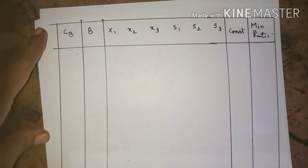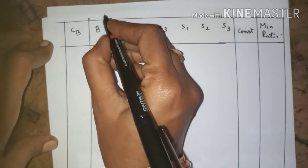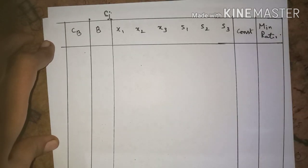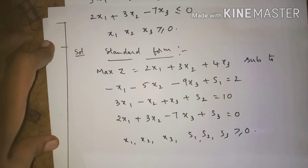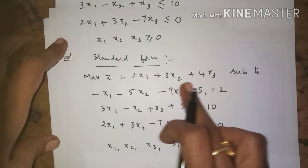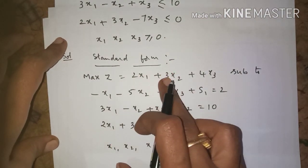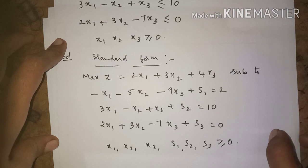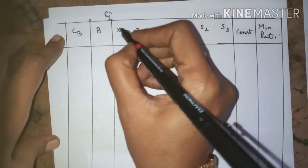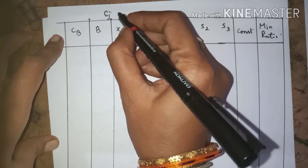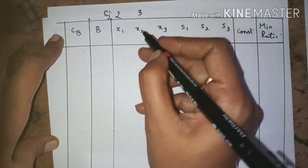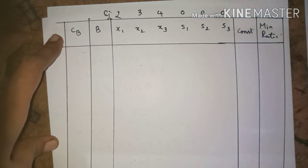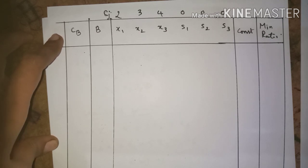We write the cj values above the table using the objective function. The coefficient of x1 is 2, coefficient of x2 is 3, and coefficient of x3 is 4. There are no s1, s2, s3 terms in the objective function, so we write 0, 0, 0 above those columns.